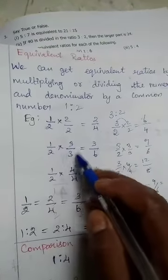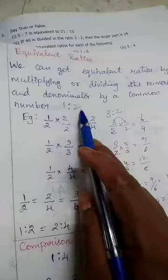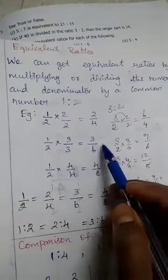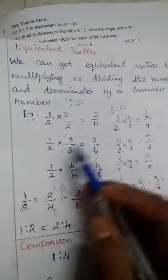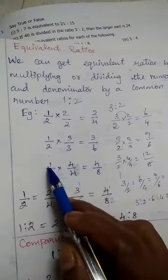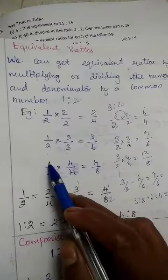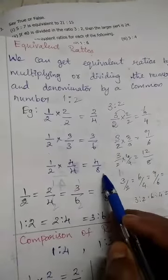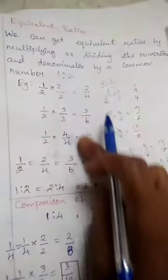Multiply 1/2 by 2/2: you get 2 by 4. Multiply 1/2 by 3/3: you get 3 by 6. Multiply 1/2 by 4/4: you get 4 by 8. So these are the equivalent ratios of 1 is to 2.